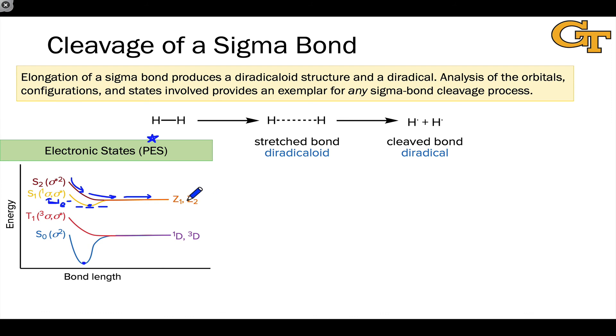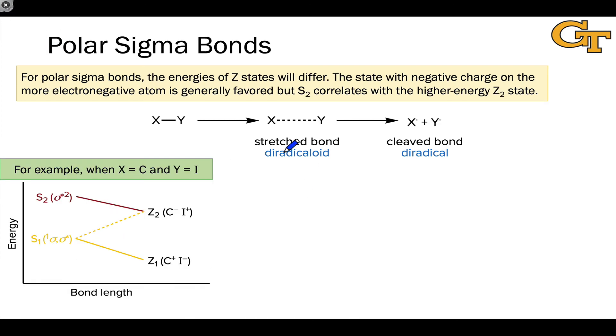Z1 and Z2 are degenerate in the case of H2 or any homonuclear bond like this with the same atoms involved. For different atoms, Z2 might be lower in energy than Z1 or vice versa. That's actually where we're going on the next slide, where we look at a polar sigma bond with X and Y being different atoms.